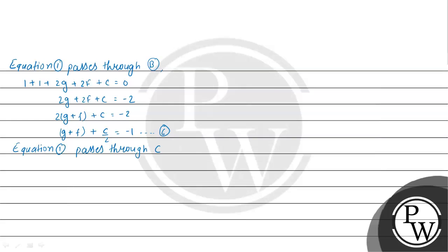When equation 1 passes through point C (0, 5/2), substituting x equals 0 and y equals 5/2: 0 plus 25/4 plus 0 plus 5f plus c equal to 0. Therefore, 5f plus c equal to minus 25/4. This is equation 7.